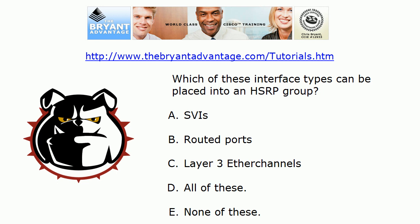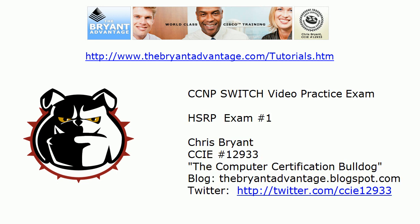We spend a lot of time with these three interface types in the CCNP Switch course: switch virtual interfaces, routed ports, and L3 EtherChannels. All three are legal to be placed into an HSRP group. Thanks for taking this video practice exam — we've got plenty of additional material, video exams, tutorials, and some surprises coming up at the Bryant Advantage website and here on the YouTube channel. I'm Chris Bryant, CCIE 12933.